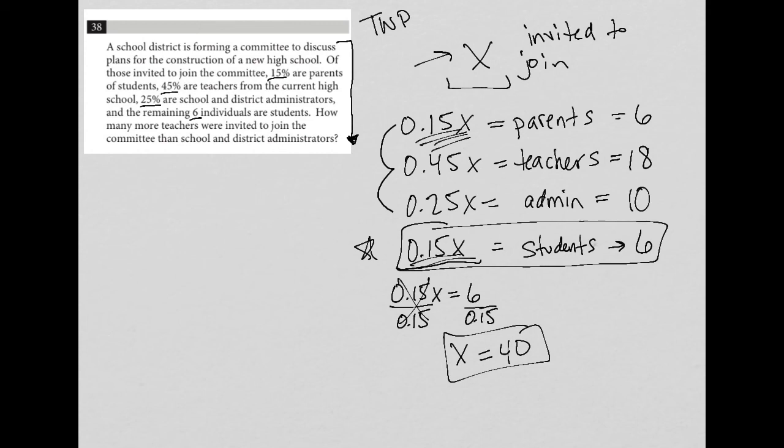And what are we being asked again? How many more teachers were invited to join than the administrators? Well, there were 18 teachers invited to join, but there were only 10 administrators invited to join, which means there were eight more teachers. So our final answer here is eight. This is a great translate word problem question. Hopefully you see the value of all this being written out instead of just being in your head. I don't know how I would answer this if I hadn't written this all out. So our answer is eight.